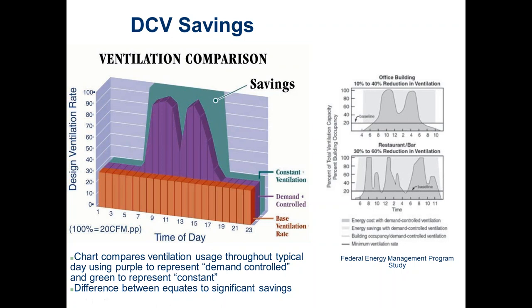Every type of major building has an occupancy profile like this, and those profiles get loaded into calculation software where you can pick from a dropdown — office, restaurant, school — and get a quick estimate of energy savings.